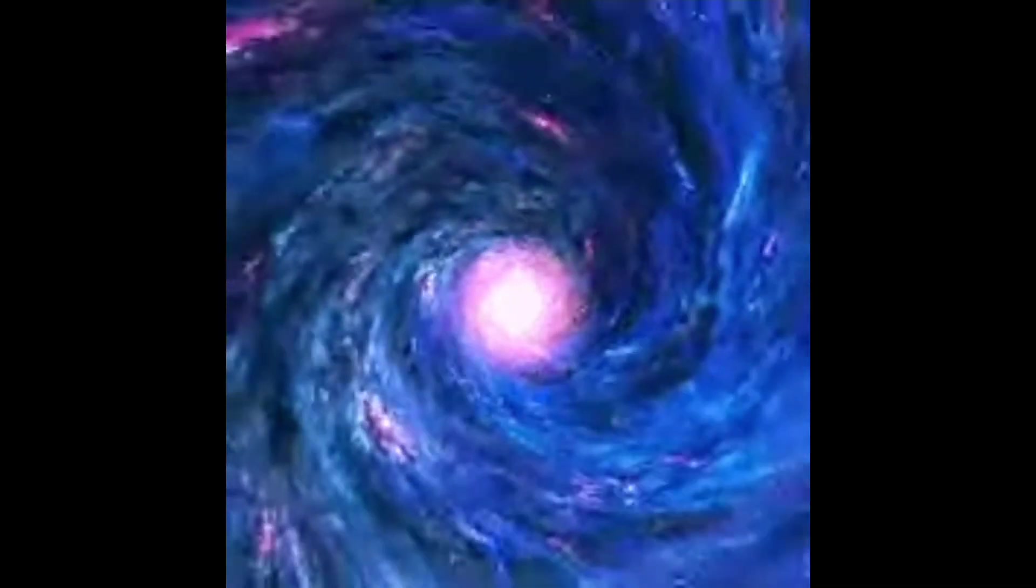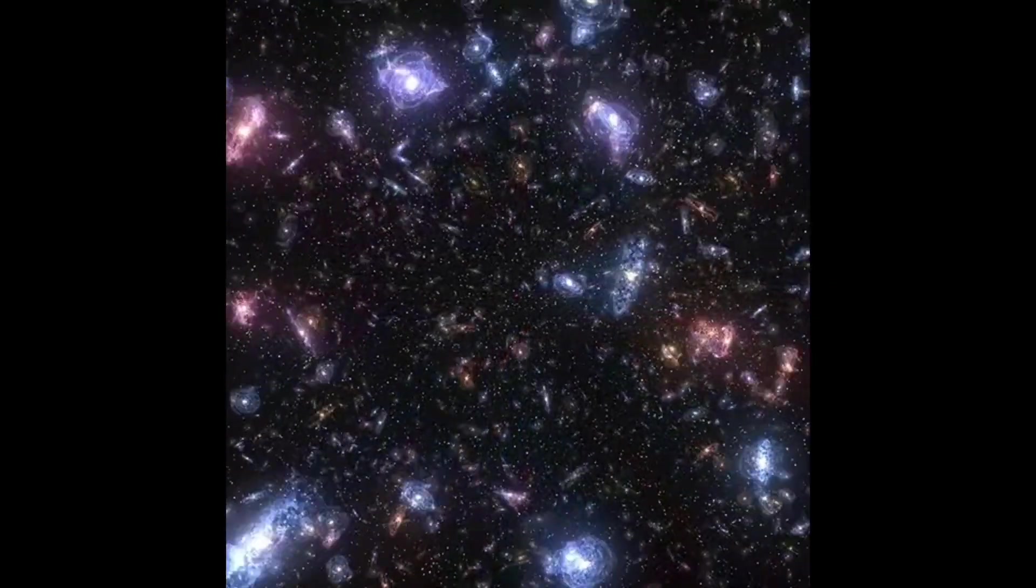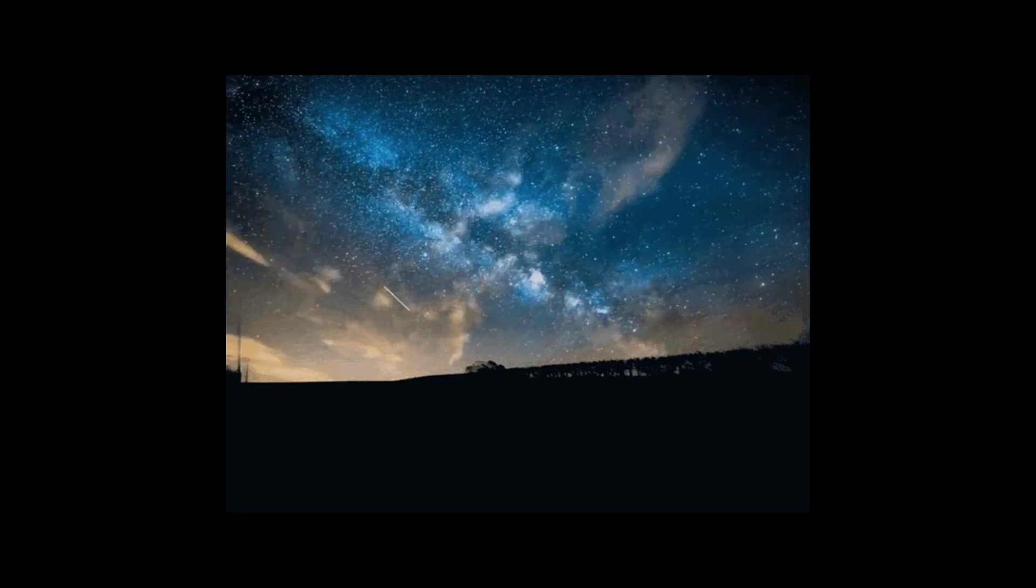Whenever we observe a planet, star or galaxy, we are seeing it as it was minutes, centuries or even millennia ago. This is because light travels at a finite speed, and given the large distances in the universe, we do not see objects as they are now, but as they were in the past.